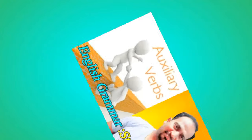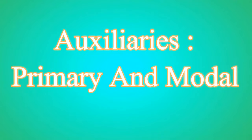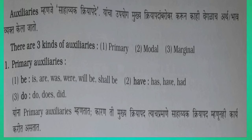Today I shall explain the grammar in English as well as in Marathi. The name of the topic is Auxiliaries, means helping verbs. These are Primary and Modal. There are three kinds of Auxiliaries: One, Primary. Two, Modal. Three, Marginal.